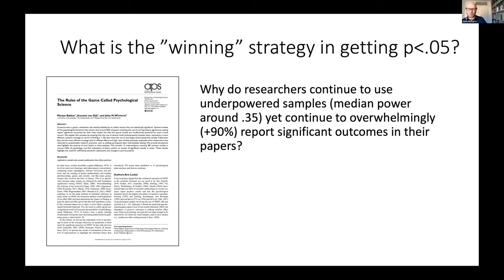Marianne and his paper estimated the average or median power based on meta-meta-analysis in psychology studies to be around 0.35. So one-third chance of getting significant — ninety percent significantly reported results. No way that this can be true. The reason — and that's actually the focus of that study by Marianne — is that using small samples, multiple small samples instead of a large one, is a very effective strategy to get significant results, particularly when the effect sizes are small or non-existent. And of course they would also use some p-hacking tricks.